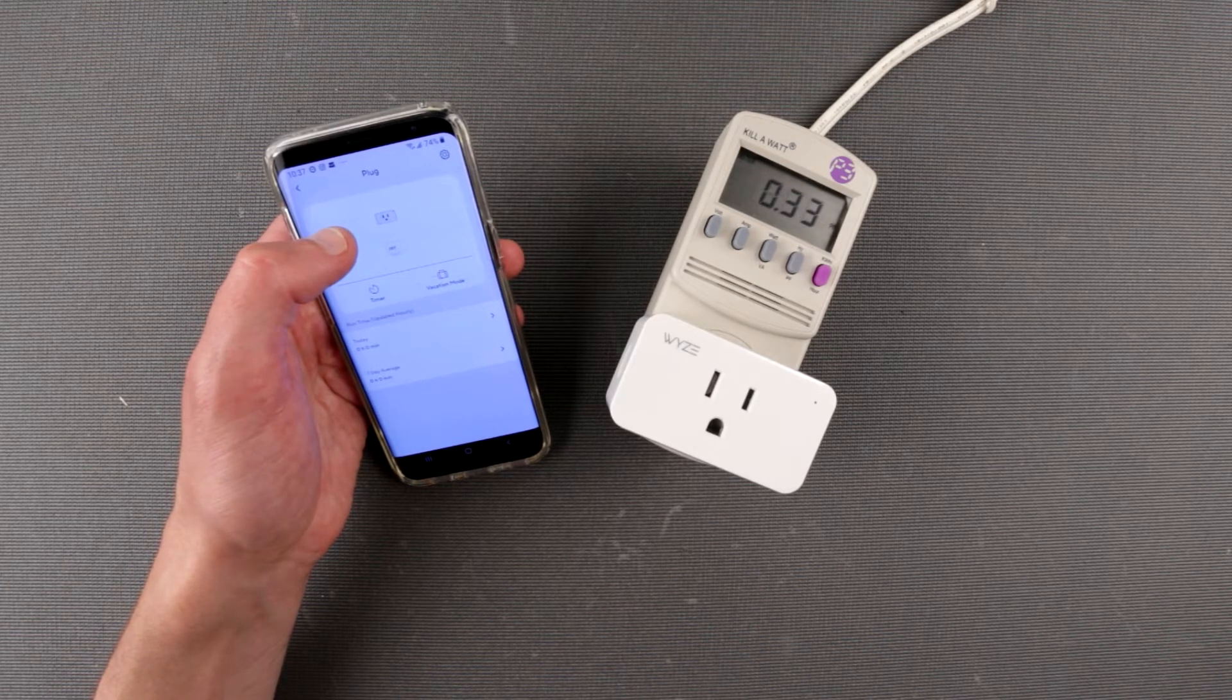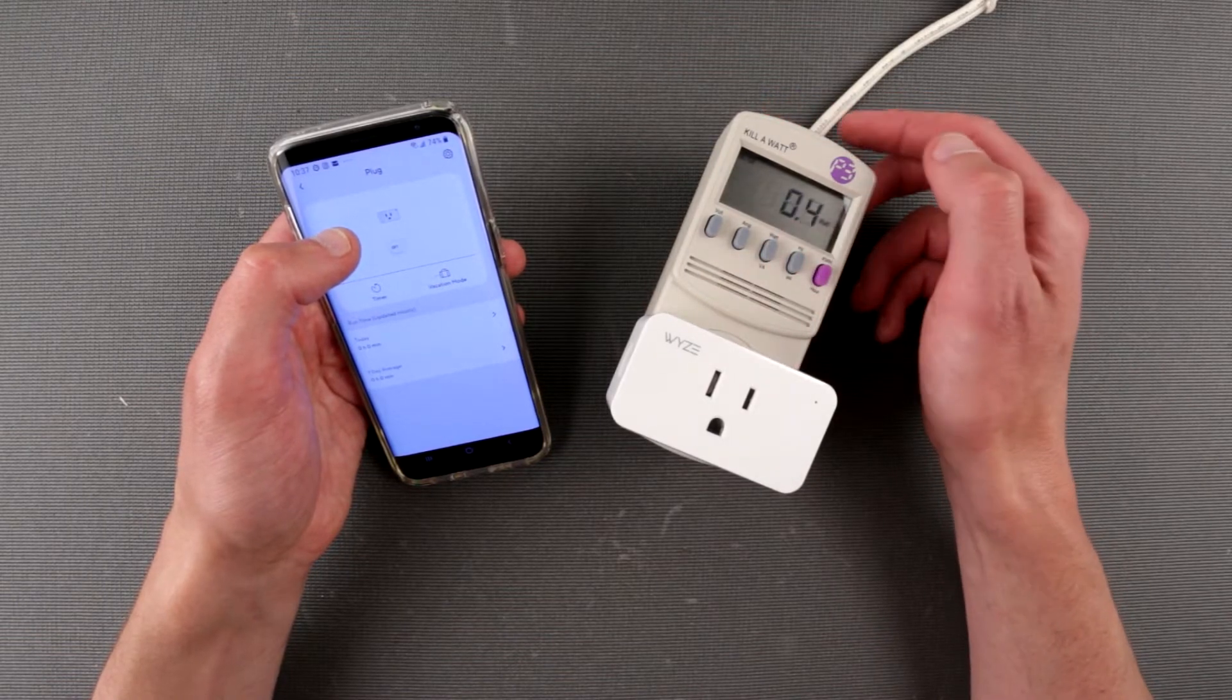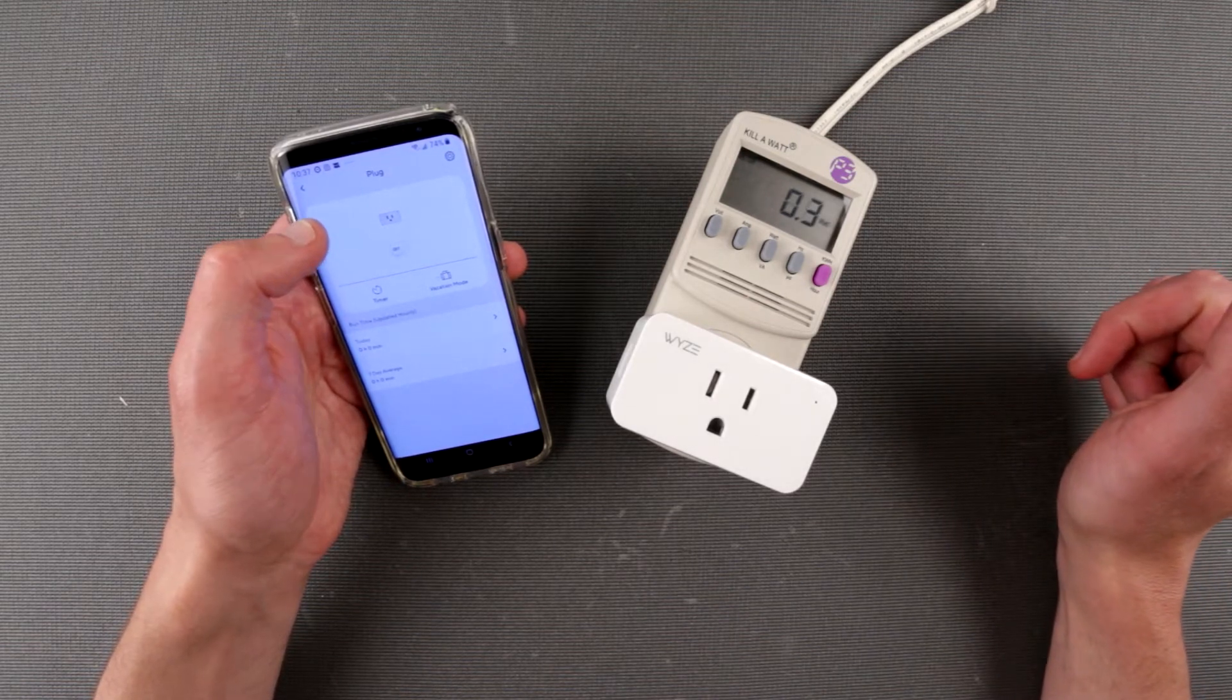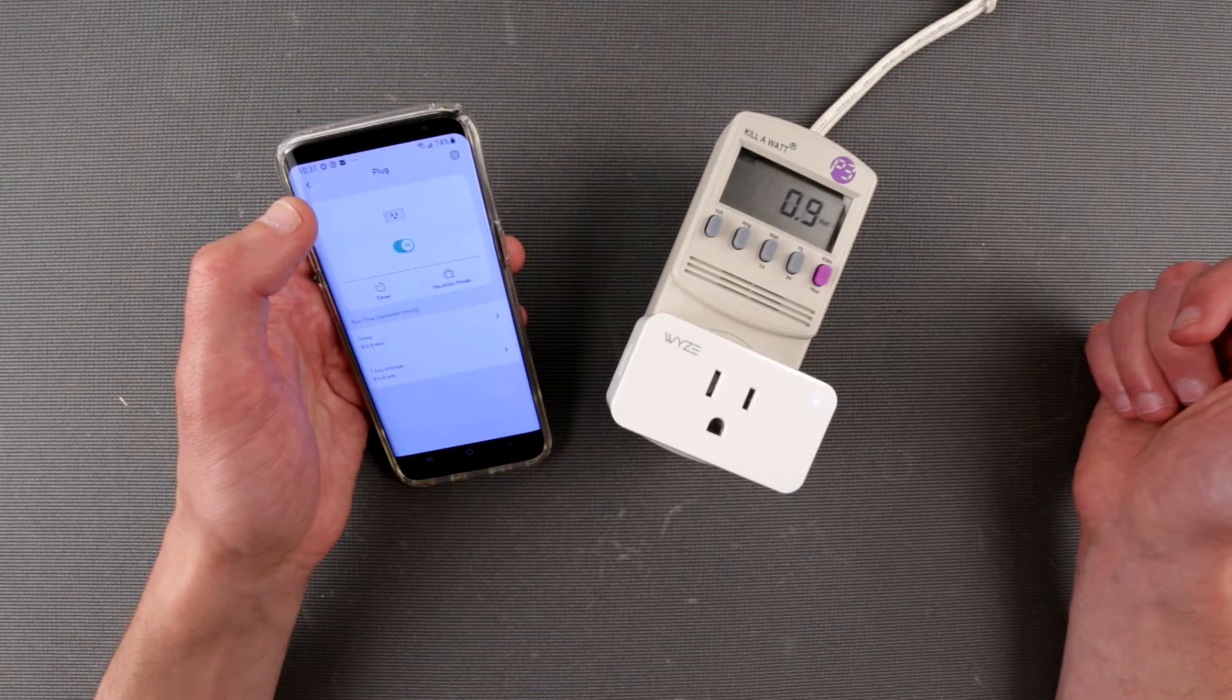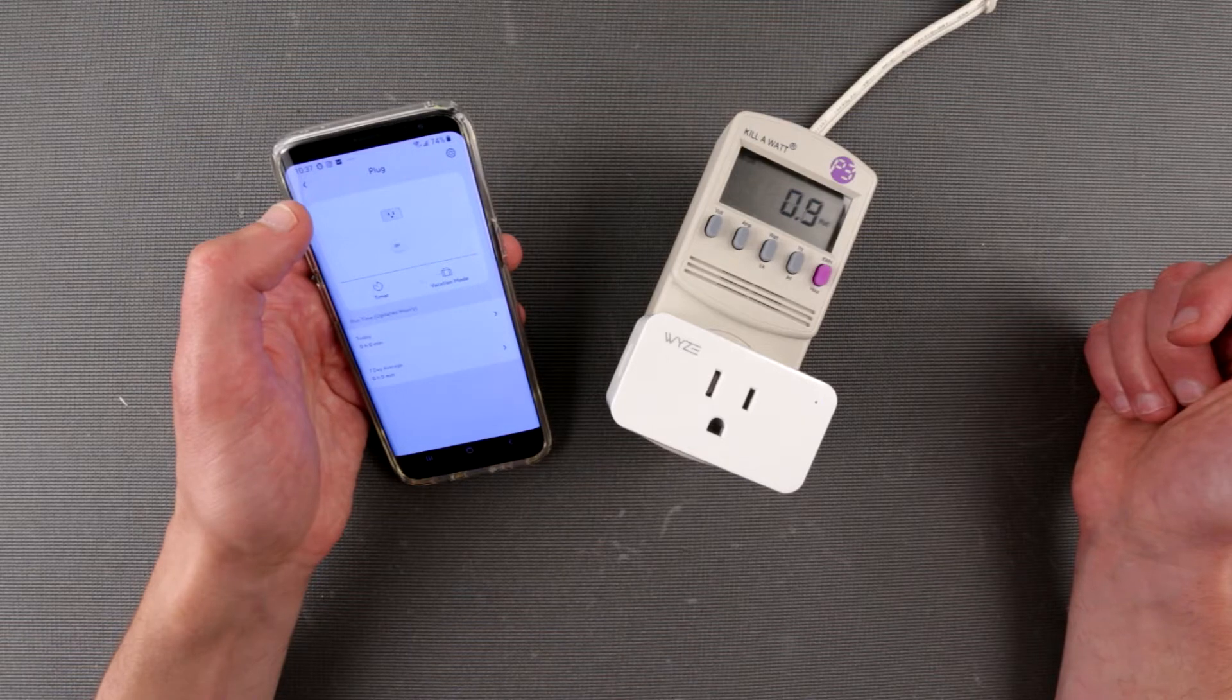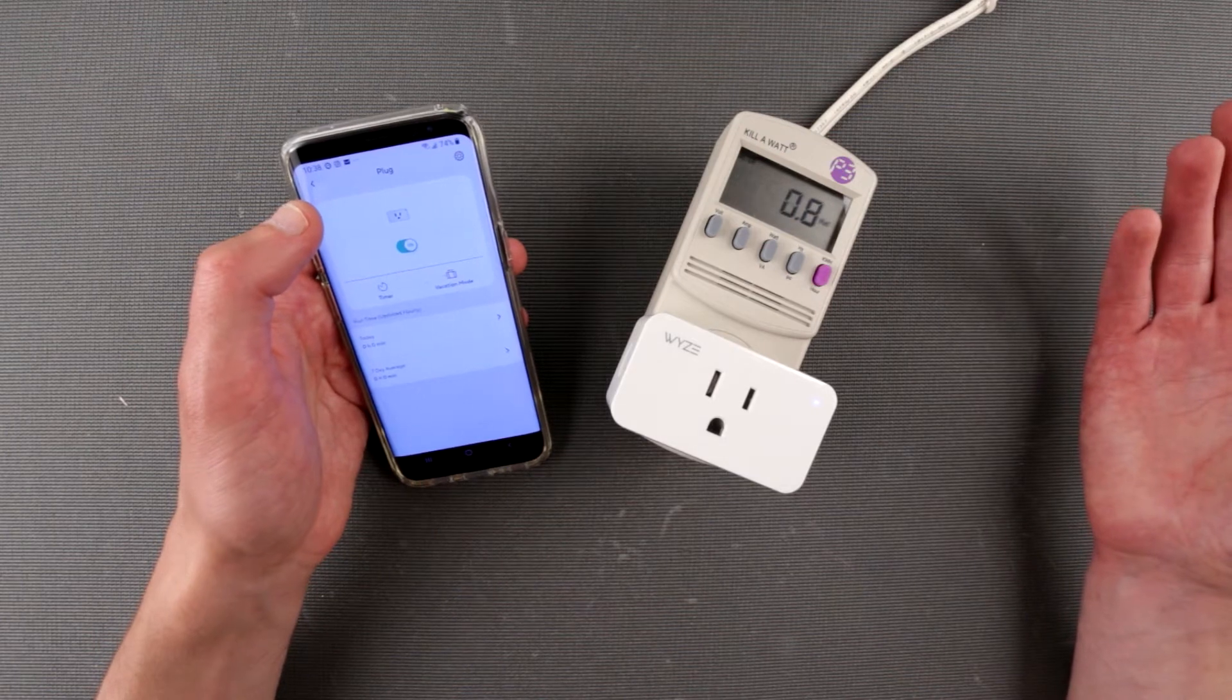It's disconnected and consumes - the power factor actually changed quite a bit. Let's see what we have here: 400, 500 milliamps, half a watt, essentially like nothing. I don't understand what's the difference between one mode and another.